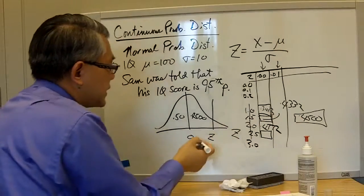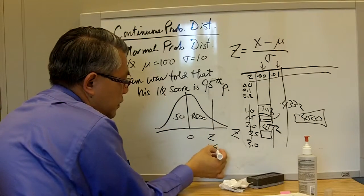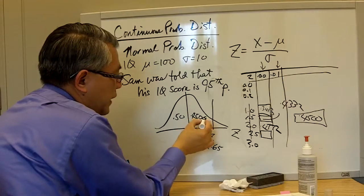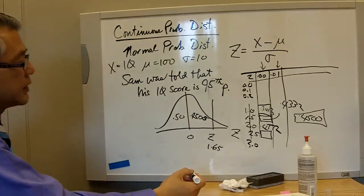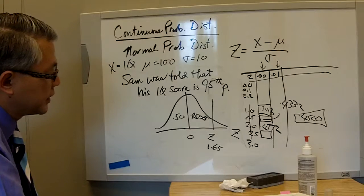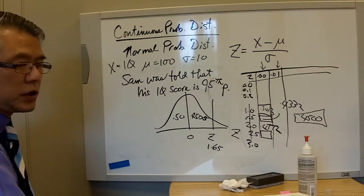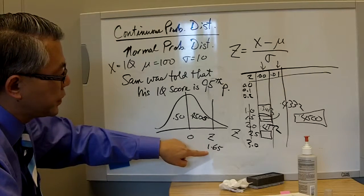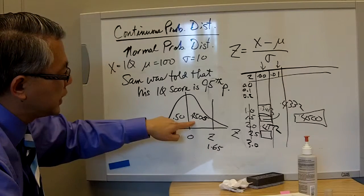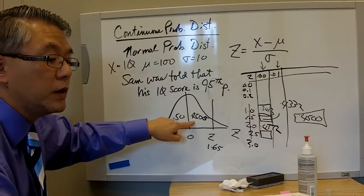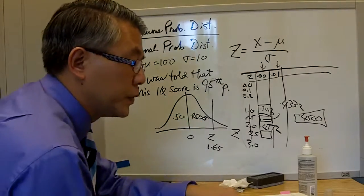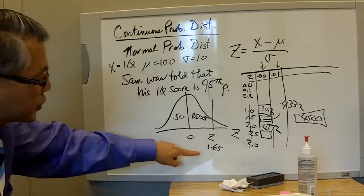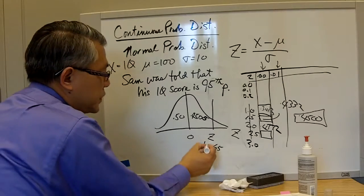So 1.65 would give me 0.4505, which is fine. I don't have to be doing any more calculations. I will take the one that is bigger. If I drop it down to 1.64, then I get 0.4495. I am just going with the bigger number.